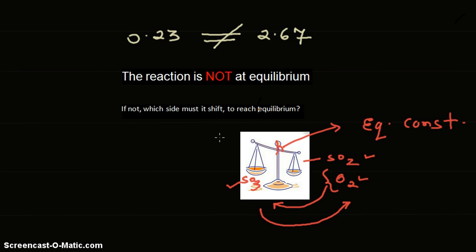Now coming to our example, the value of equilibrium constant is 0.23, and the ratio which we got is 2.67 to 1. So we got the concentrations of SO₂ and O₂ as 2.67 and the concentration of SO₃ as 1, whereas the concentration should be 0.23 to 1.